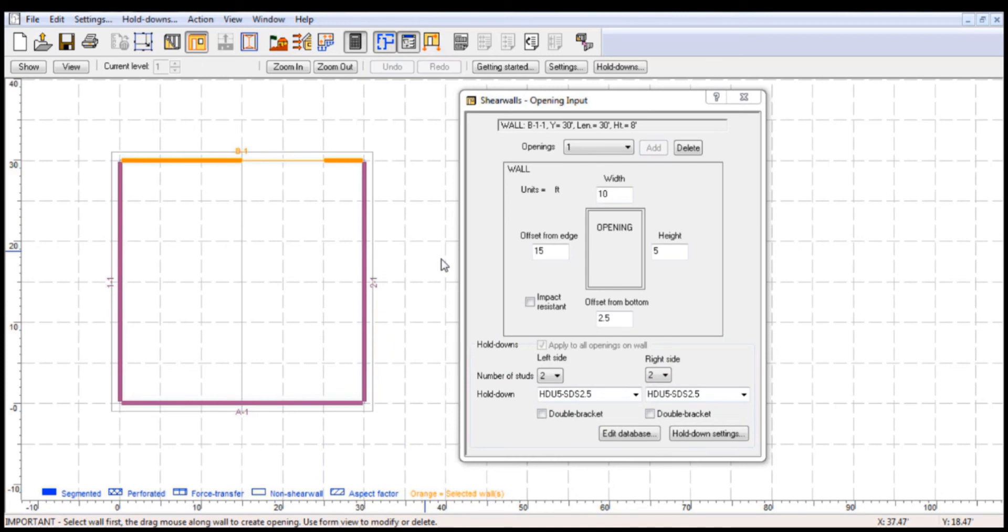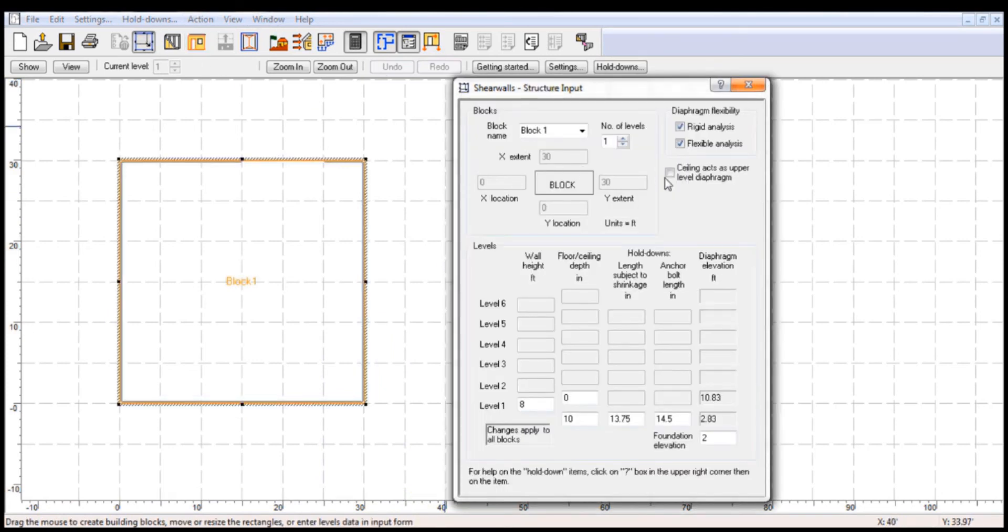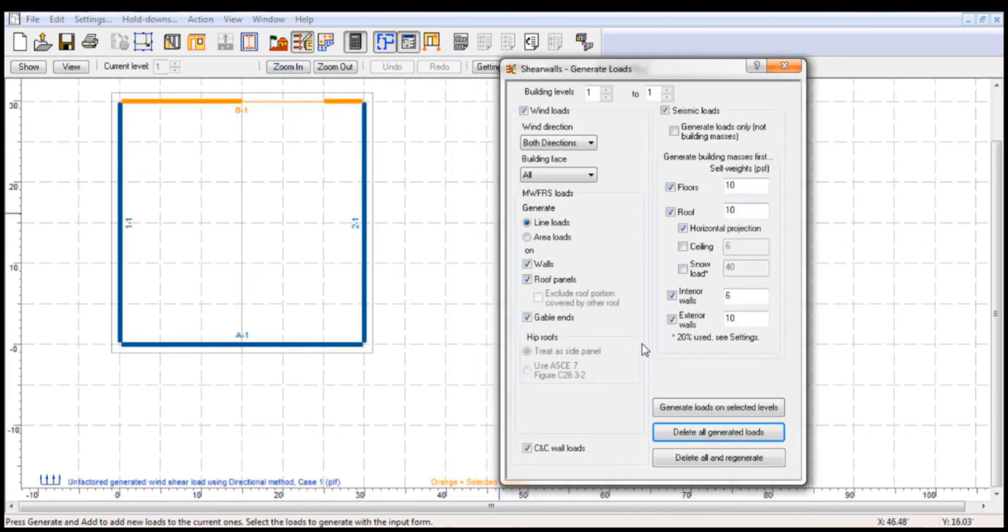Now, should we only want to complete a rigid analysis, we would uncheck the flexible diaphragm analysis feature available in the structure block input view, just like in previous videos.